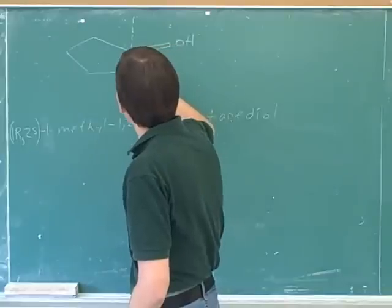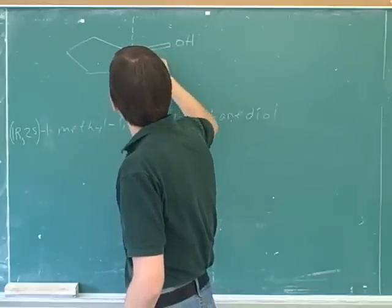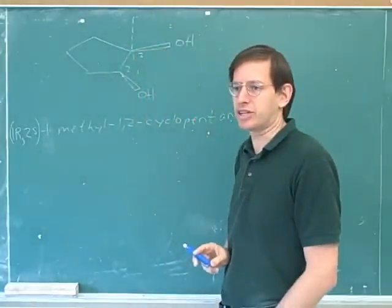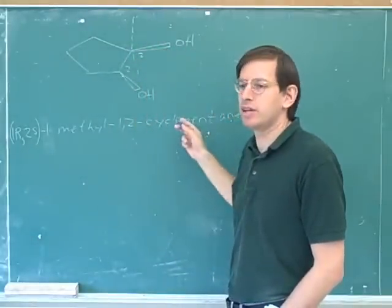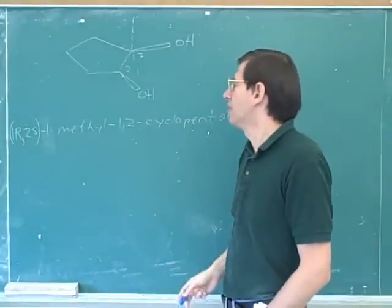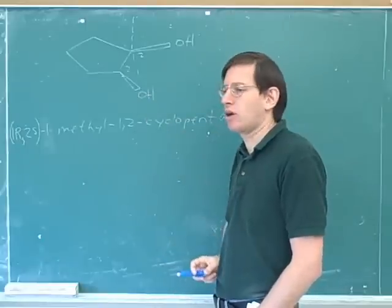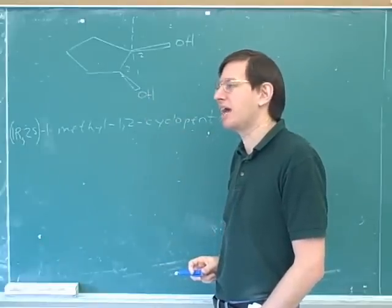Now, you could have done the numbering one, two, or one, two. You can go in either direction. But which one is right? Well, the way you did it was right. So either direction that you number in, then there will be an alcohol on the number one and an alcohol on the number two. So how can we break the tie?